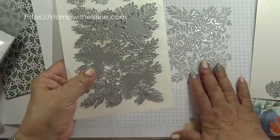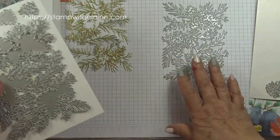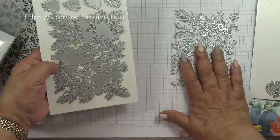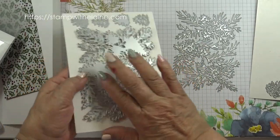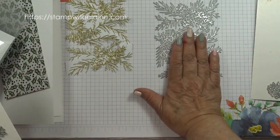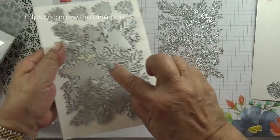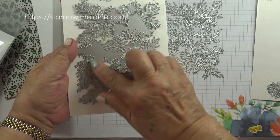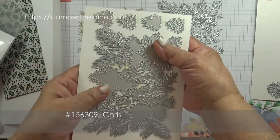So in the Christmas Pinecone die set you have two large dies. One is the background and this is the highlight. So we're using the highlight one which has more apertures, and you can cut that in a darker cardstock and place that on top, but we're not using that one.